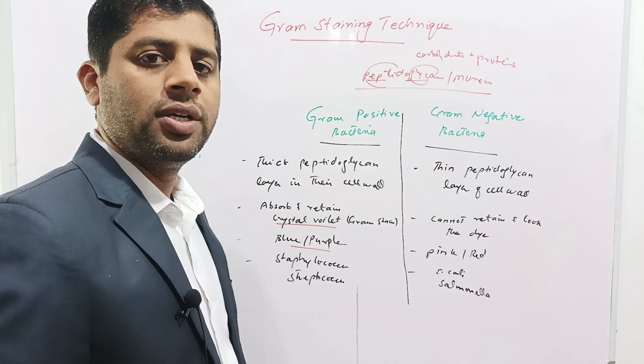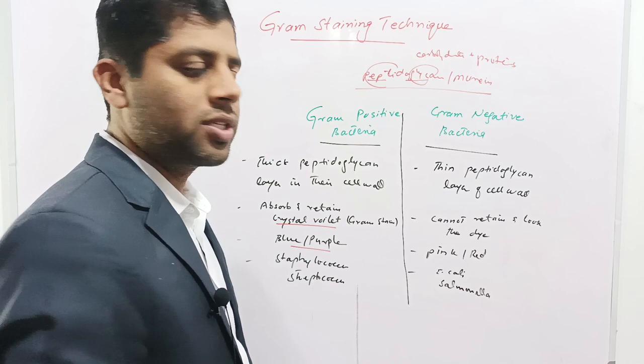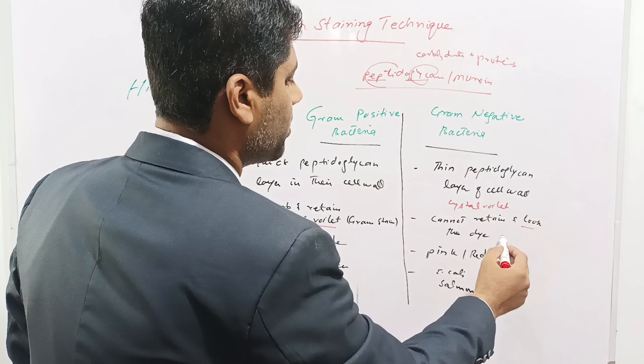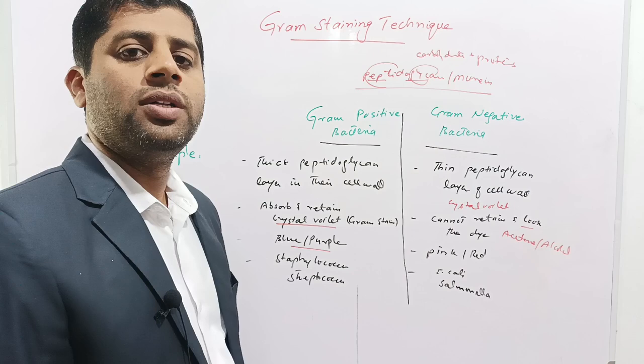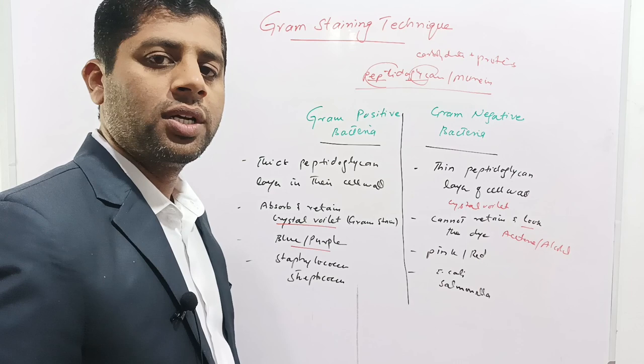In contrast, Gram negative bacteria have a thin peptidoglycan layer in their cell wall, due to which they cannot retain the crystal violet dye and lose it after washing with acetone or alcohol, appearing transparent. Therefore, these are counterstained with the safranine dye and appear pink or red in the microscopic view. Common examples of Gram negative bacteria are E. coli and Salmonella.